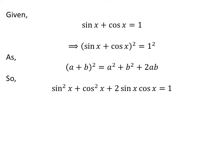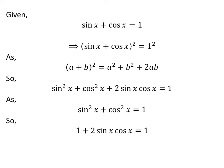Application of the above identity gives us: square of sin of x plus square of cosine of x plus 2 times sin of x times cosine of x is equal to 1. We know the famous trigonometry identity: square of sin of x plus square of cosine of x is equal to 1. So, application of this identity gives us 1 plus 2 times sin of x times cosine of x is equal to 1.